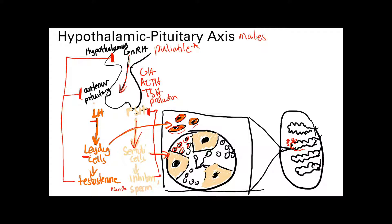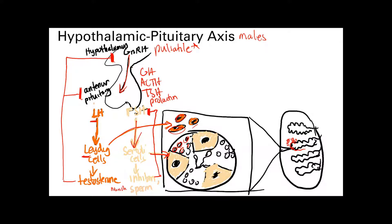Now moving to females: again, the hypothalamus produces pulsatile GnRH, which acts on the anterior pituitary to secrete LH and FSH.